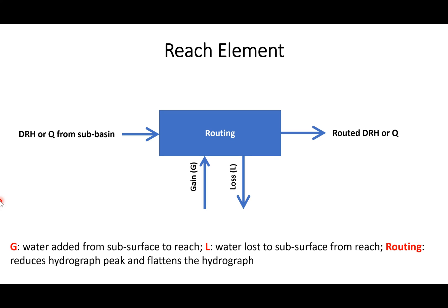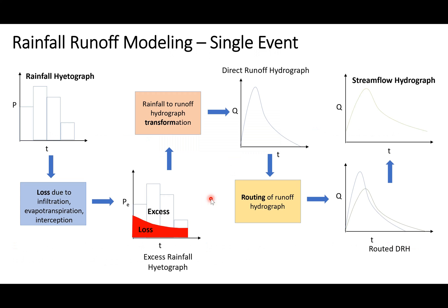After the hydrograph is generated from the sub-basin, it flows through reaches to the outlet via routing. Reach elements also have loss and gain methods if water is lost or gained along the channel. Graphically, the process starts with a rainfall hyetograph, subtracts losses to get excess rainfall, transforms that into a direct runoff hydrograph, routes it through reaches, and adds base flow to get the total streamflow hydrograph.